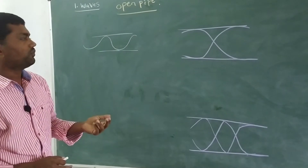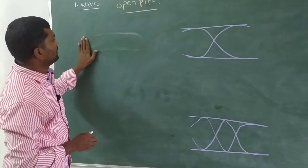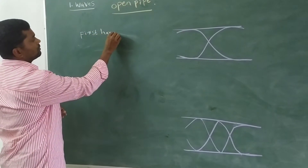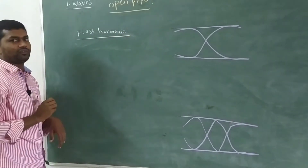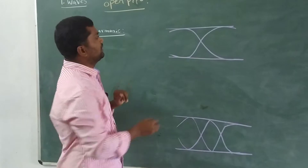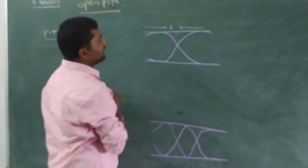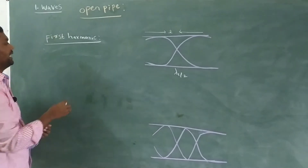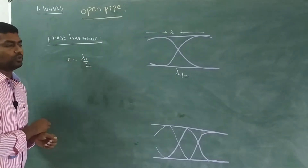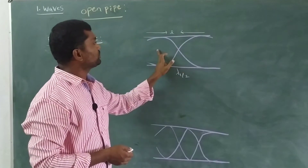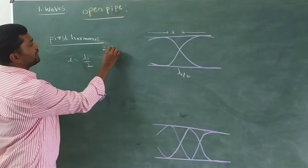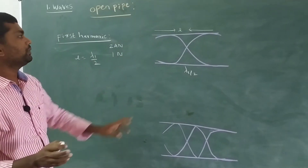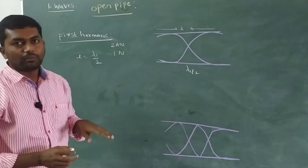Let's calculate the fundamental frequency, also called the 1st harmonic. The total length of the pipe is indicated by L. For the fundamental mode, the length L is equal to λ₁ by 2. This forms 2 antinodes and 1 node. So the vibrating length of the pipe L is equal to λ₁ by 2.